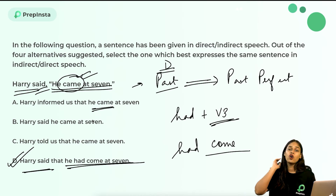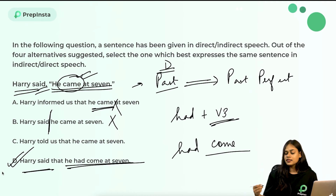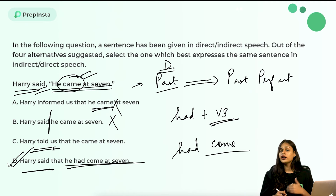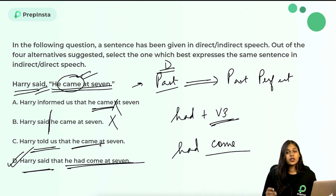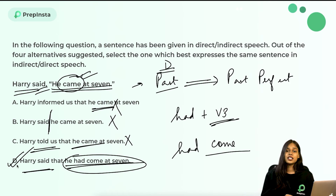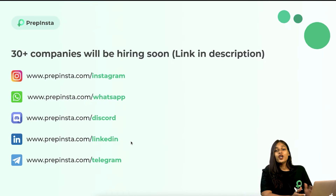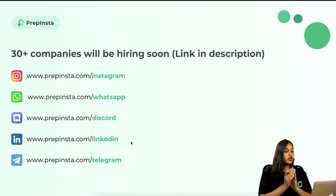Options A and B use simple past 'came' which is incorrect for indirect speech. Option A is also missing the conjunction 'that.' Option B uses 'told us' which isn't wrong, but 'came at seven' is incorrect since we must convert past to past perfect. Option D — 'he had come at seven' — is the correct structure, making it the right answer.